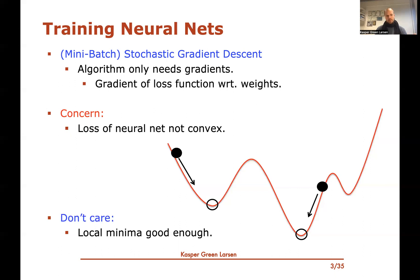The thing with neural nets is that in practice, local minima are just good enough. If you go to one of these local minima, you're actually going to do well on the training data, and so this suffices. The basic idea is: you don't care about reaching the global minimum — you're just going to minimize the loss function using gradient descent, end up in some local minimum, and hopefully that's a good enough local minimum.